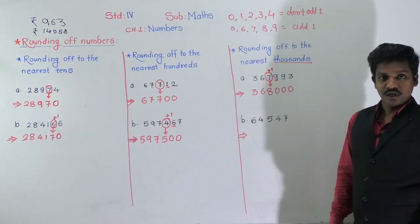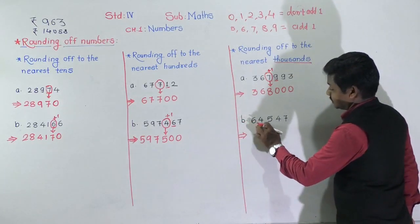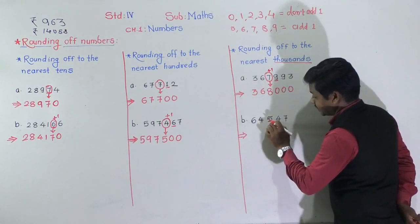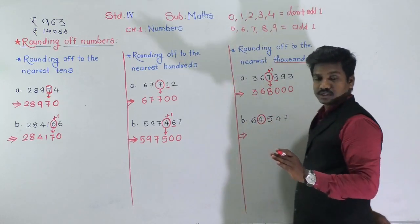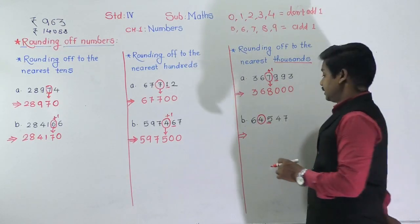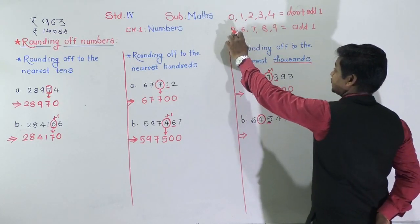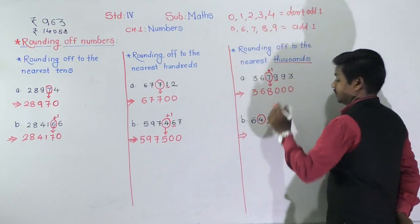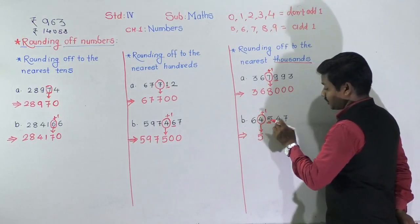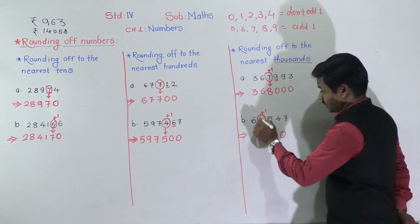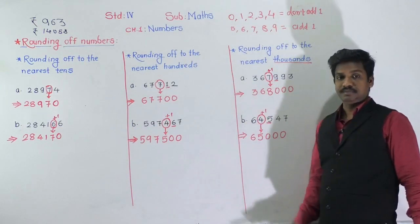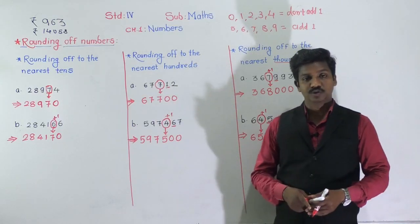Next: round off 64,547 to the nearest thousand. Ones, tens, hundreds, thousands — circle the thousands place digit, which is 4. See the next digit — it is 5. Since 5 falls in our second rule, we add 1: 4 plus 1 equals 5. Write three zeros for the next three digits and take the digit before as it is. So 64,547 becomes 65,000 after rounding off to the nearest thousand.